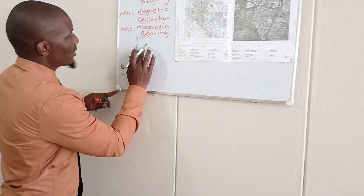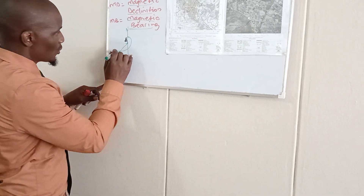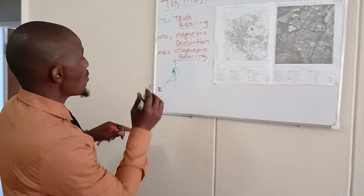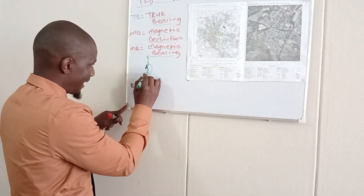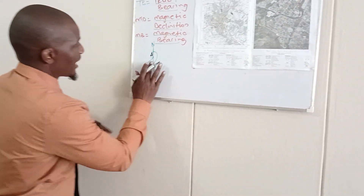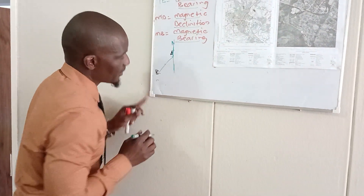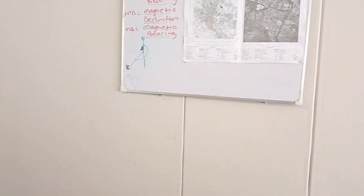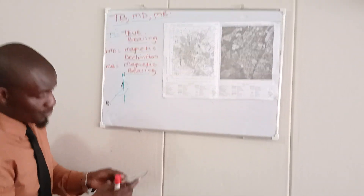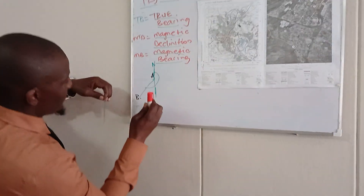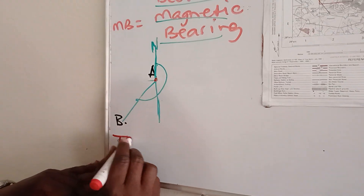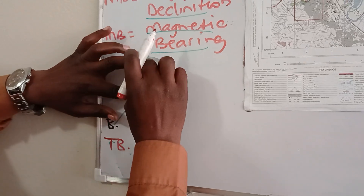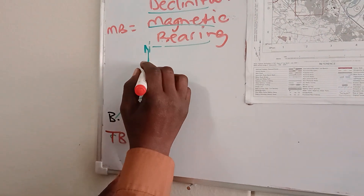When we want to calculate your true bearing, we are looking for the angle in degrees from the true north. The first thing you do — if they ask you to find the true bearing of B from A — you go to where it says 'from.' You draw a perpendicular line and identify your true north. The angle you want to measure for your true bearing is from the true north line up to the line joining A and B. Then you take your protractor, place it exactly at the center where you have your fixed point, and measure from there.